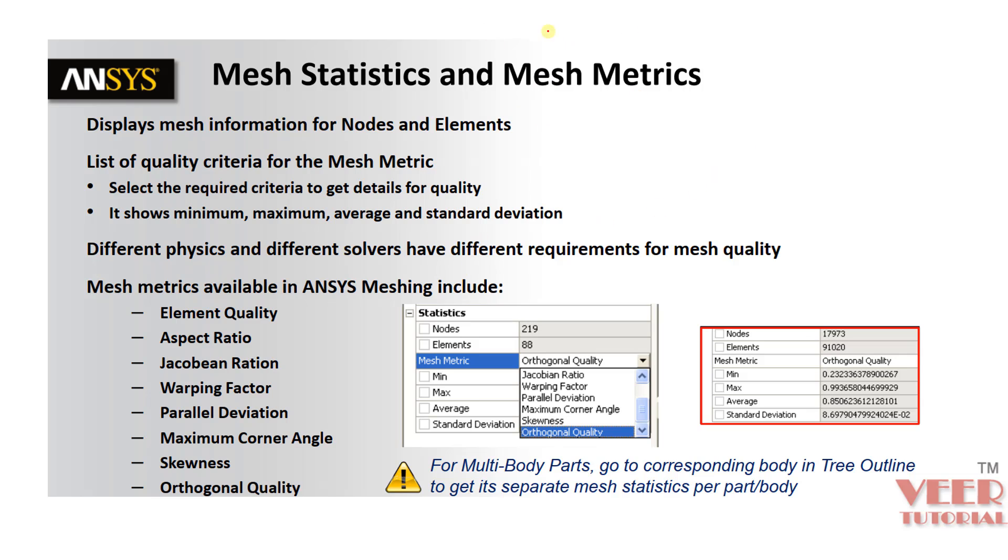In the element quality, we have some parameters like element quality, aspect ratio, angle, Jacobian, warping factor, parallel deviation, corner angle, skewness and orthogonal quality. So here we can see all the options inside this mesh metric option. So we are going to learn how these type of element quality are calculated inside the software.